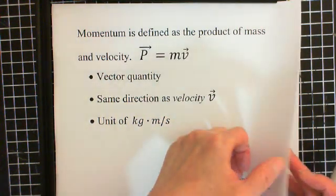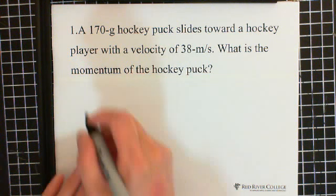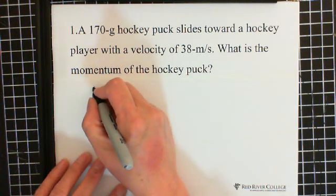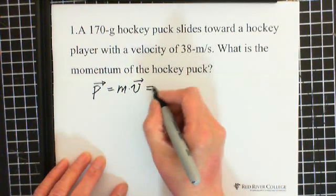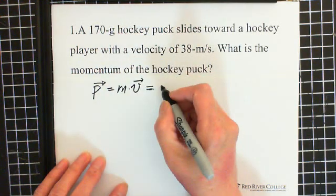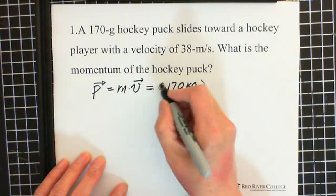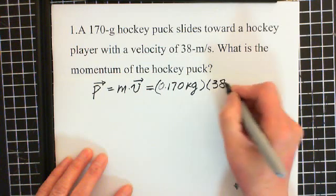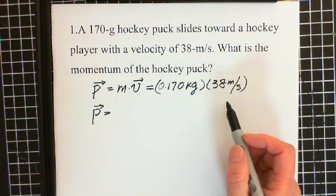Let's look at an example. A 170-gram hockey puck slides towards a hockey player with a velocity of 38 meters per second. What is the momentum of the hockey puck? Using the formula p equals m times v, the mass is 170 grams, which we convert to 0.170 kilograms, since 1 kilogram equals 1,000 grams.